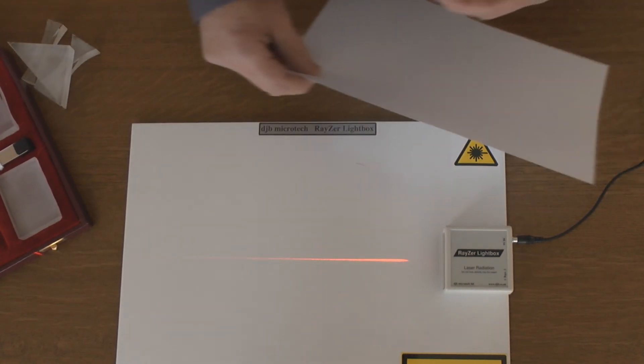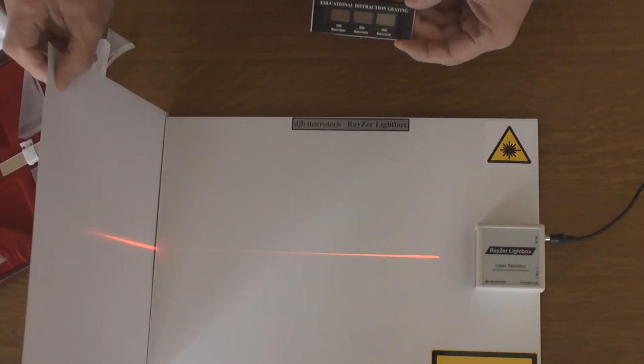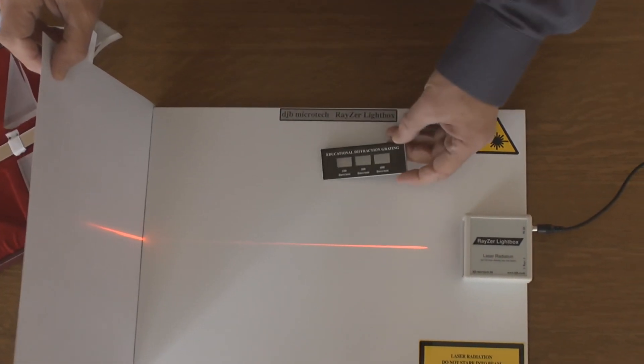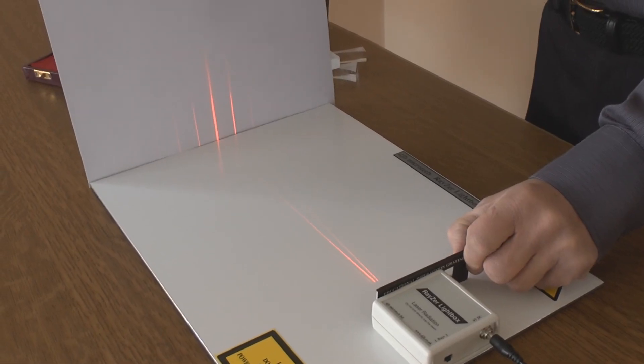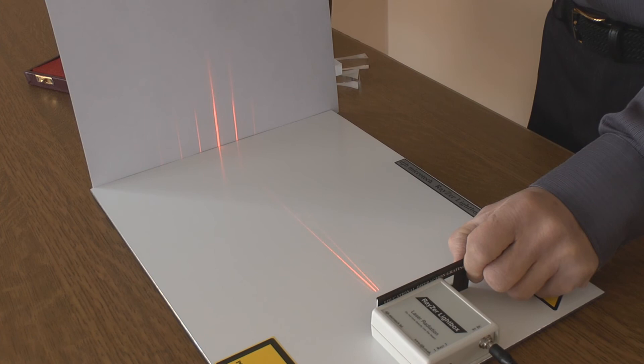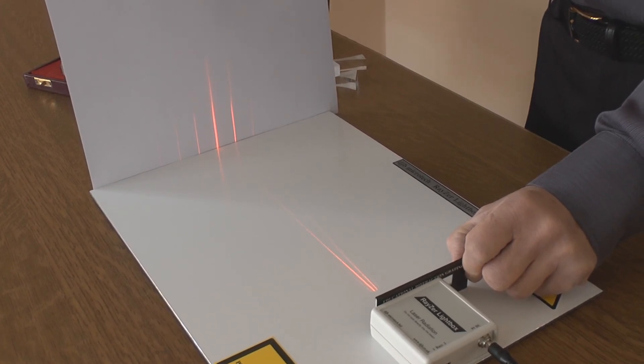If I take a card and put it at the end we will be able to see the fringe separation. We'll put a piece of white card here and you can see clearly the fringe separation.